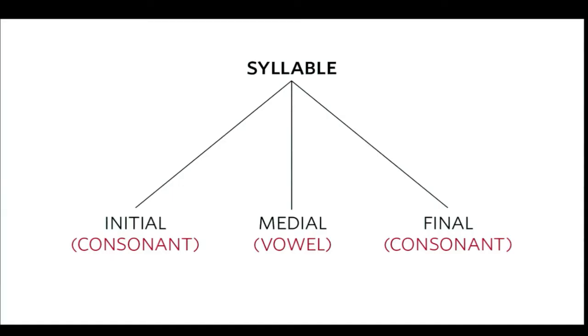Sejong studied the sounds and structure of the Korean spoken language and broke down the syllables into three distinct sub-parts: initial, medial, and final. He realized that the initial and the final were made up of consonant sounds, and the medial are the vowels. Thus was born the alphabetic system.